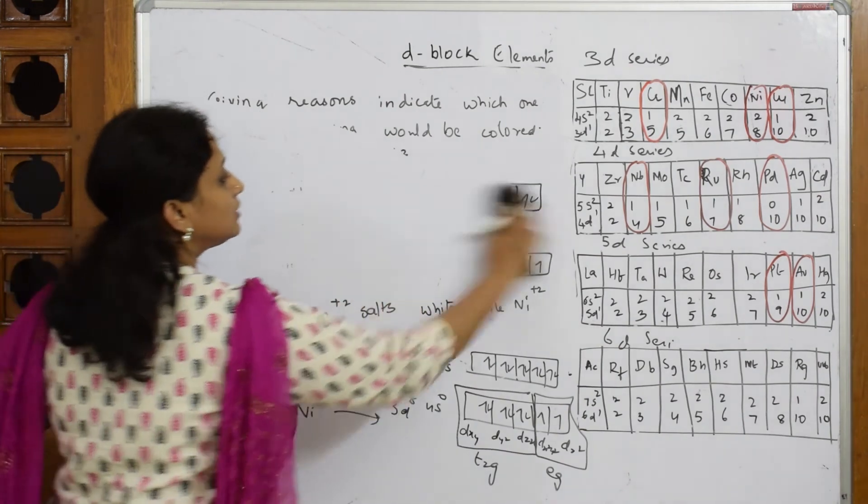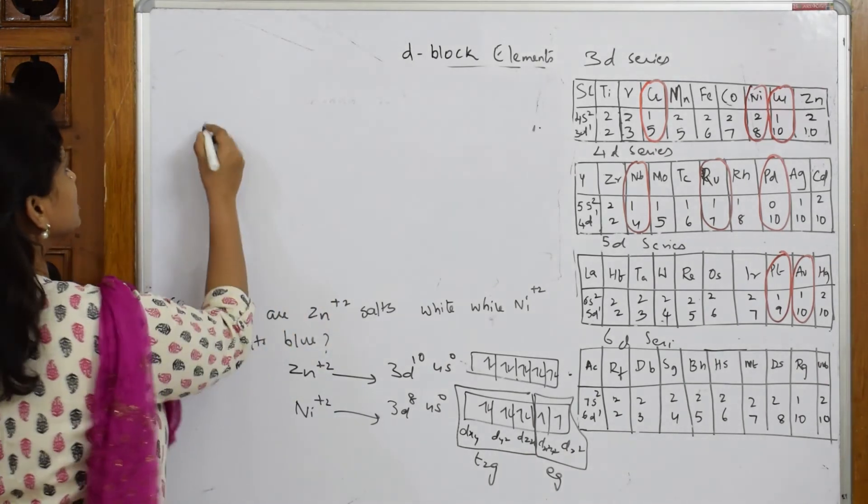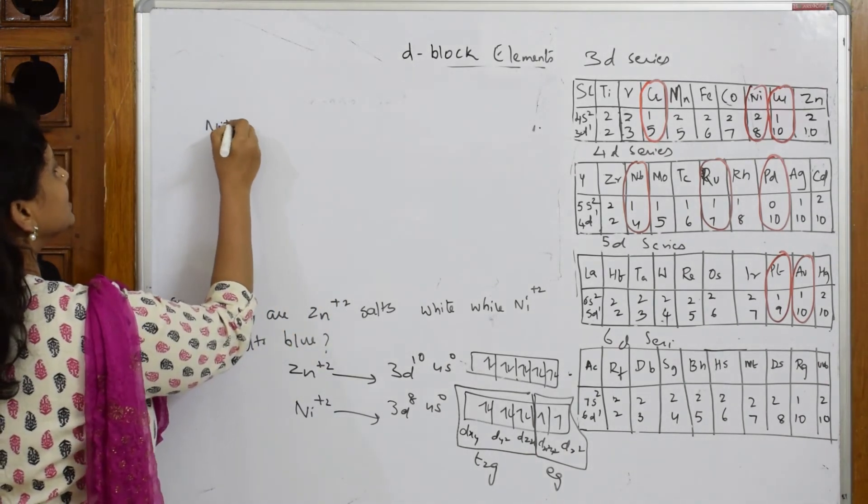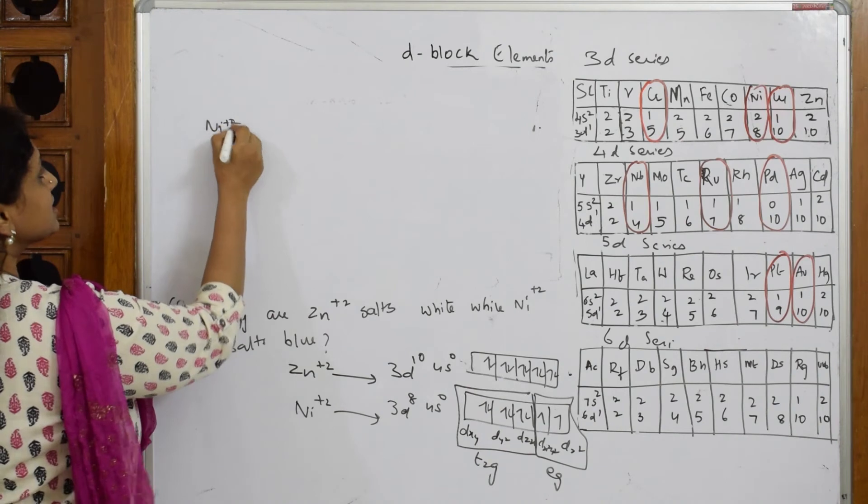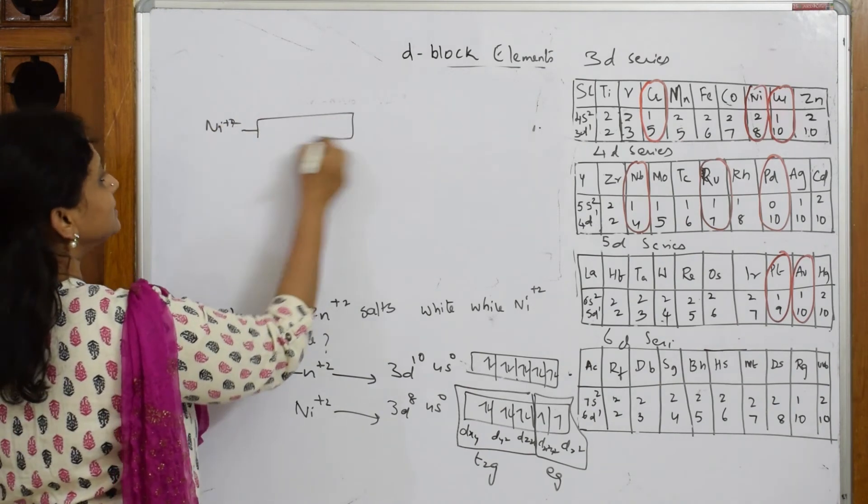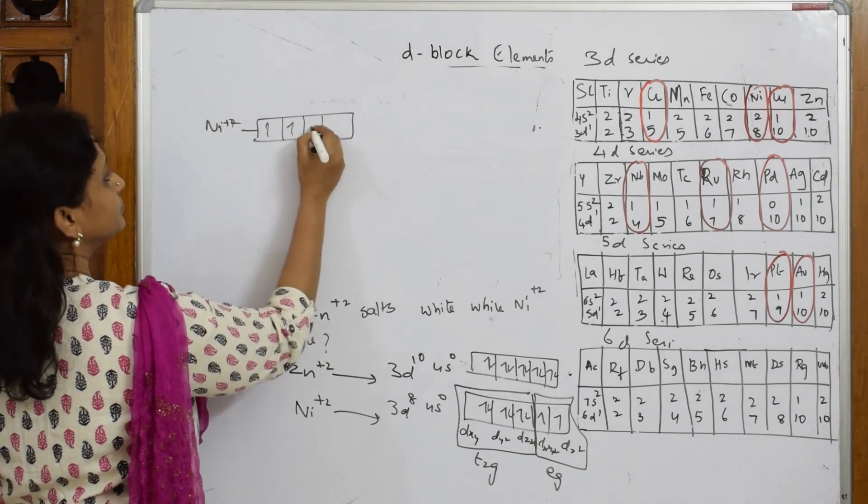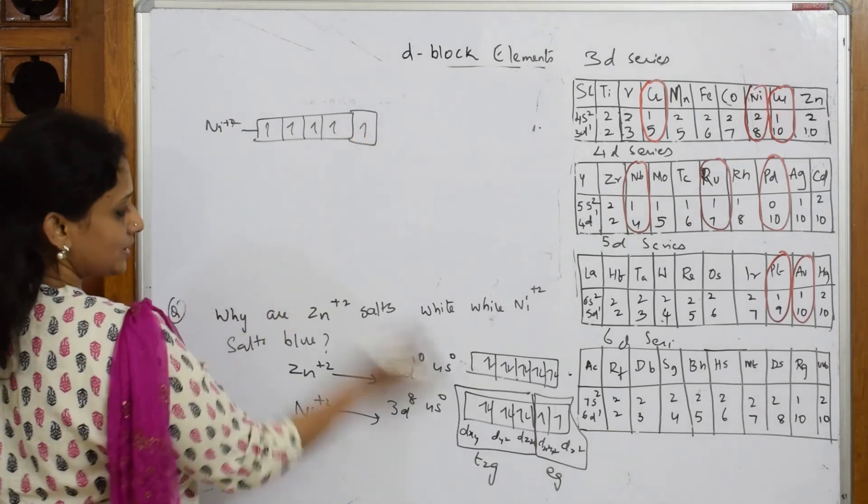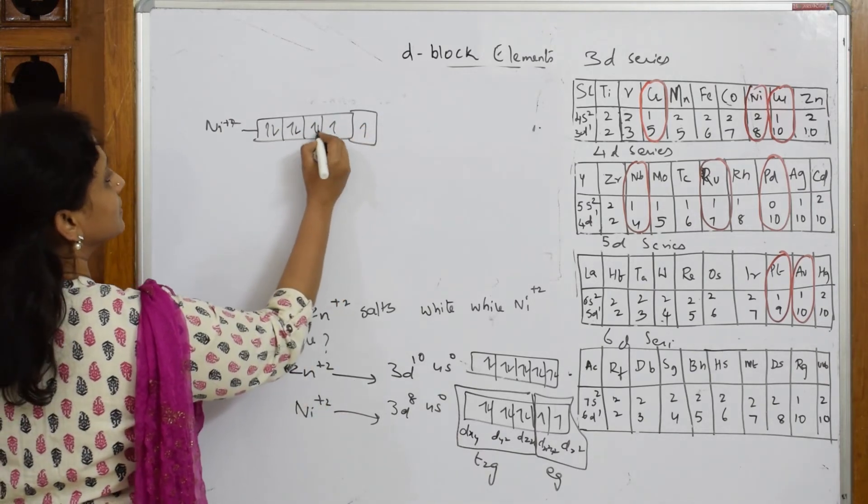What did I say? I proved nickel is colored in nature. Nickel has +2 state. In this +2 state it has 1, 2, 3 this way, and first three we are.